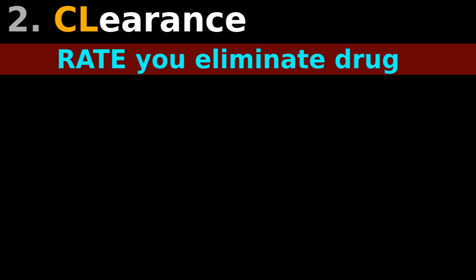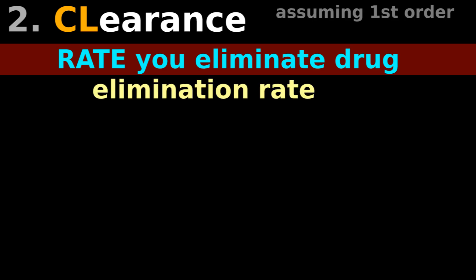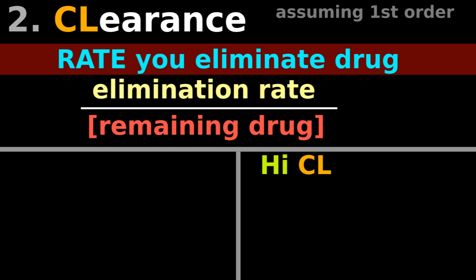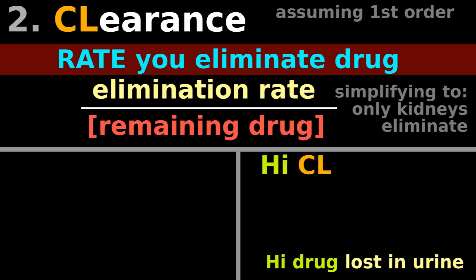Clearance is the rate you eliminate a drug, calculated by elimination out rate divided by concentration of remaining drug. High clearance means there is high drug lost in urine and therefore less drug remaining in your body.